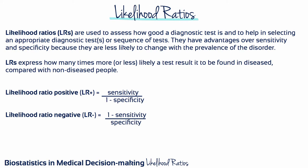Likelihood ratios are an alternative way of describing the performance of a diagnostic test. They summarize the same kind of information as sensitivity and specificity and can be used to calculate the probability of disease after a positive or negative test result. Essentially, they combine information about sensitivity and specificity into a single clinically useful measure, and because of this, they don't depend on the prevalence of the disease, but are fixed, independent characteristics of the test itself, unlike predictive values.